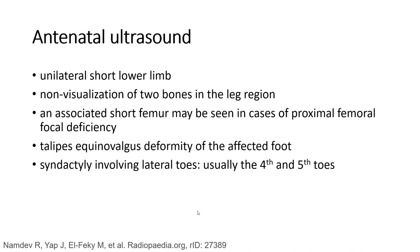On antenatal ultrasound, unilateral short lower limb with non-visualization of two bones in the leg region may be seen. Associated short femur may be seen in cases of proximal femoral focal deficiency. Talipes equinovarus deformity of the affected limb and syndactyly involving the lateral toes, usually the fourth and fifth toes, may also be present.